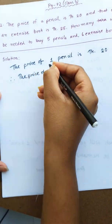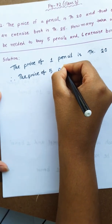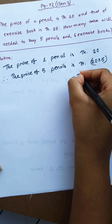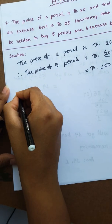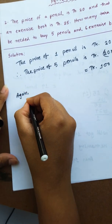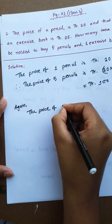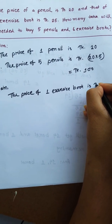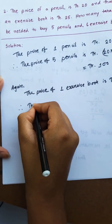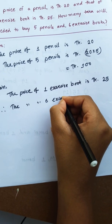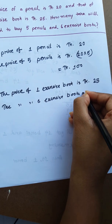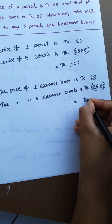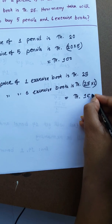The price of 5 pencils is taka 20 into 5, which is taka 100. Again, the price of 1 exercise book is taka 25. Therefore, the price of 6 exercise books is taka 25 into 6, which is taka 150.